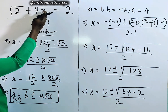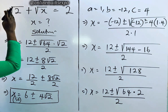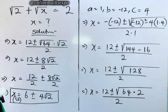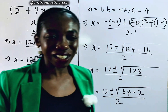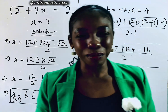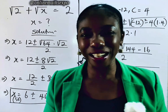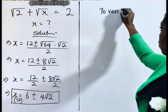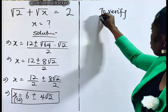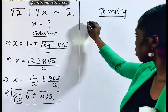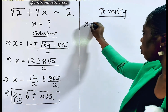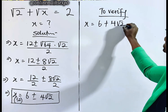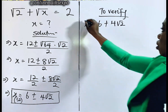Now we're going to do a verification — plug each value of x into the left side to see if it gives us 2. That is the most interesting part. Let's verify together. We'll work with the positive case first: x = 6 + 4√2.